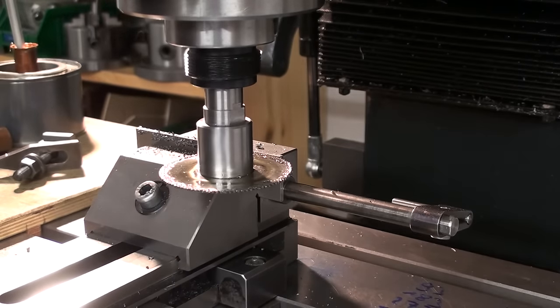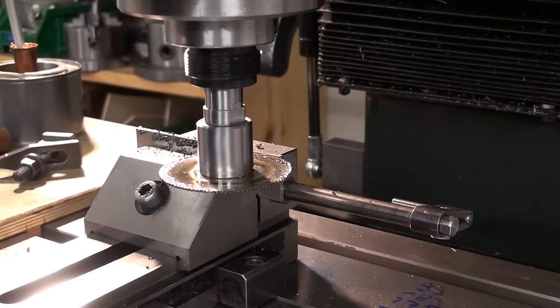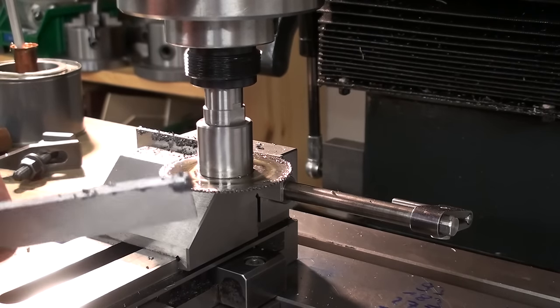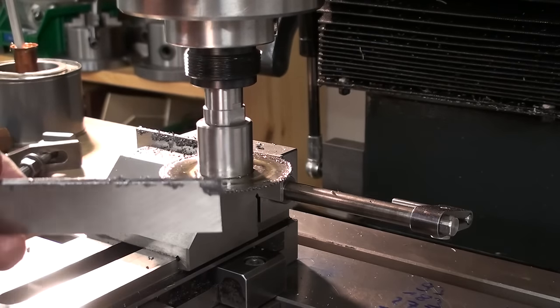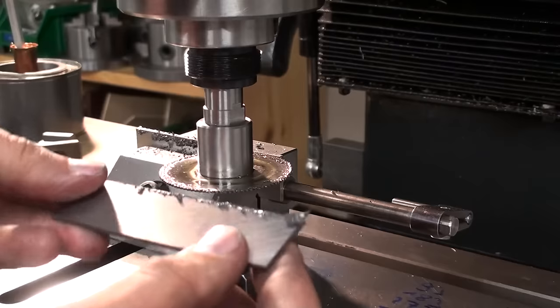Just cut up the piece into strips. Now we can deburr them and mill them rough to size and then we're going to harden them.